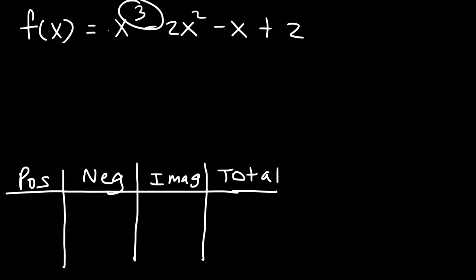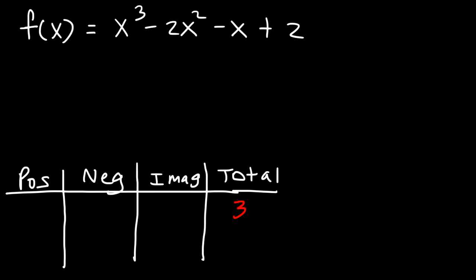Notice that we have a polynomial with a degree of 3, so the total number of zeros should be 3. To determine the possible number of positive real zeros, look at the sign changes for f(x). It changed from positive to negative — that's one change. Then negative to negative — no change. And negative to positive — that's another change. So there are two sign changes.